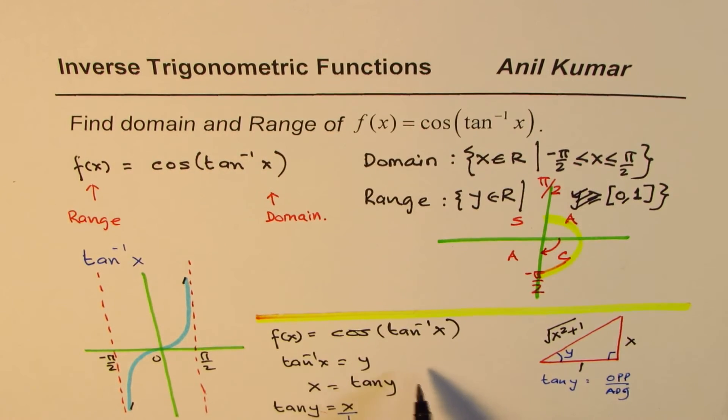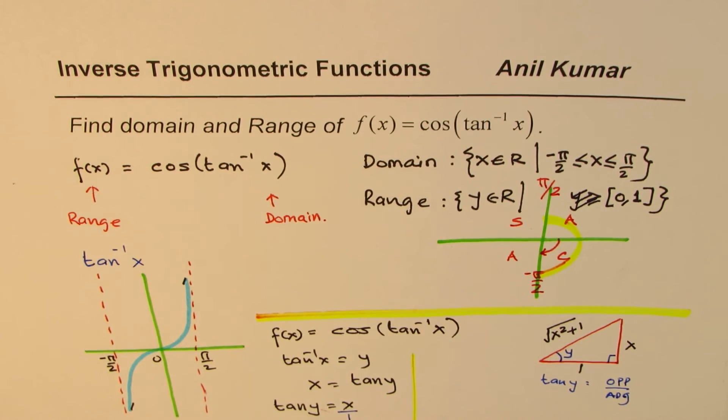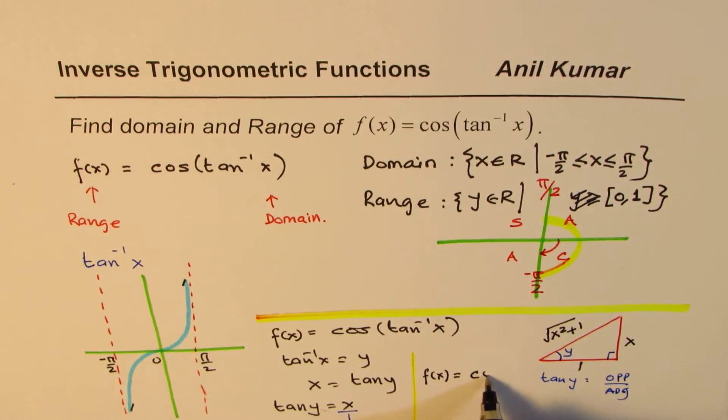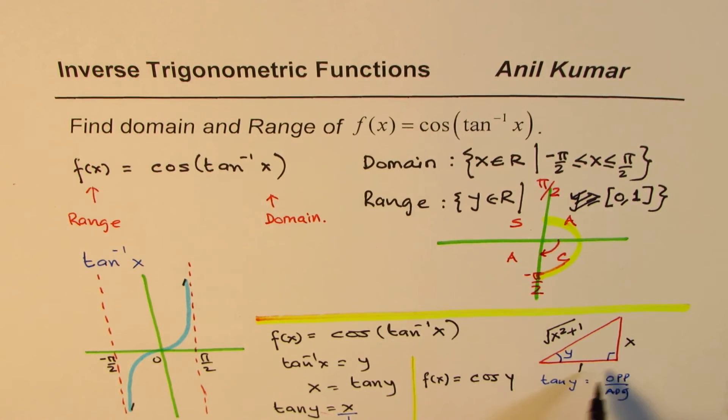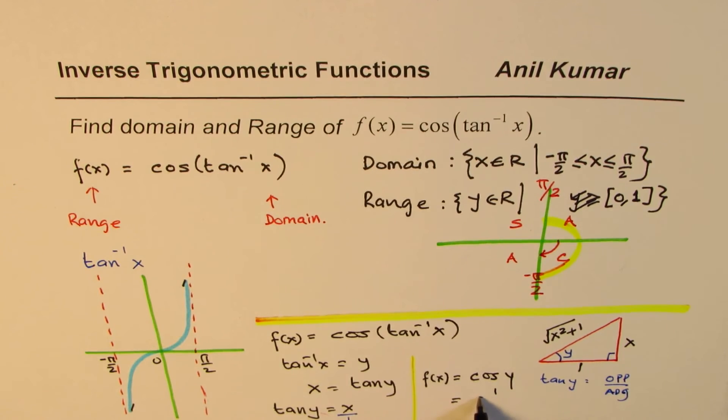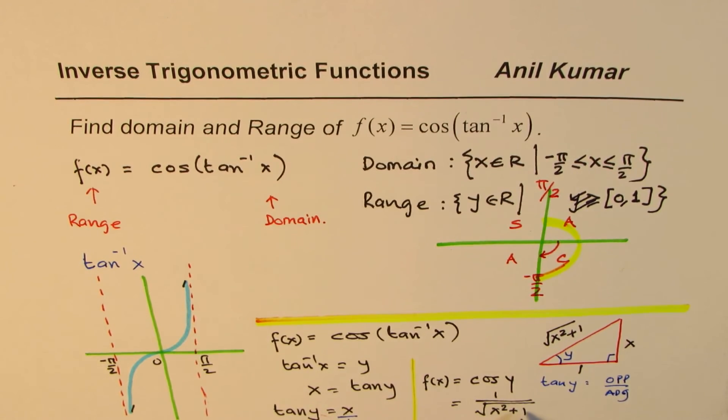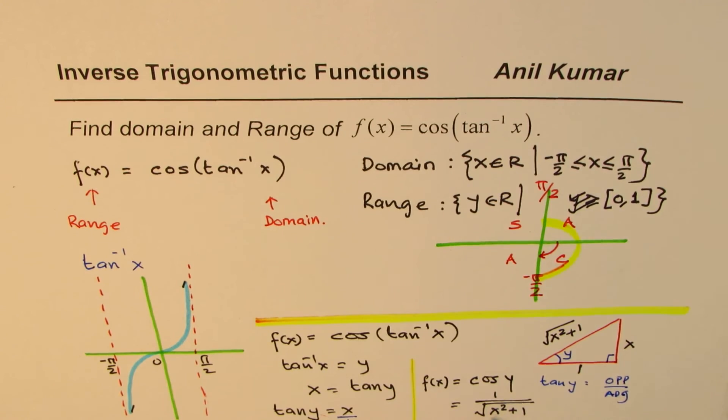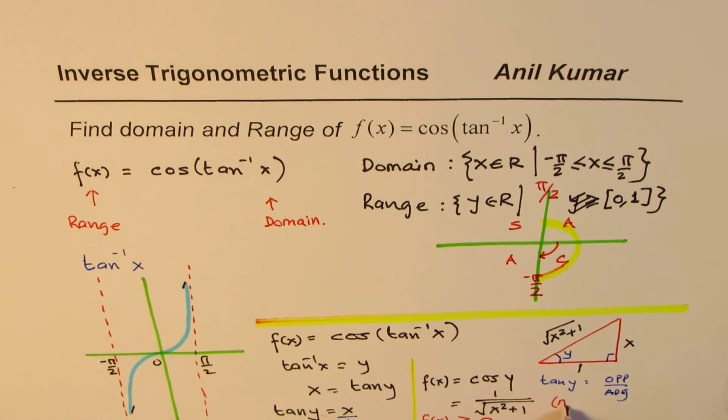So coming back to our equation f(x) equals cos(tan⁻¹(x)), if tan⁻¹(x) is equals to y, in that case we could write this equation as f(x) equals cos(y). We are saying tan⁻¹(x) is y. So f(x) is cos(y) and from this triangle what is cos(y)? Cos(y) is adjacent over hypotenuse which is 1 over √(x²+1). You will notice from here that the function square root is always positive and from here you can see that f(x) is always greater than or equal to 0. It is non-negative.